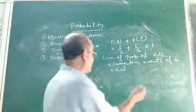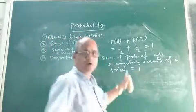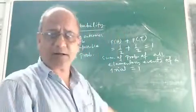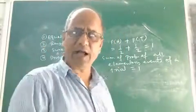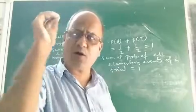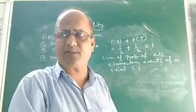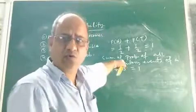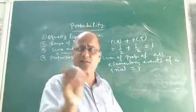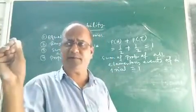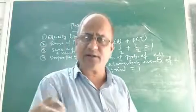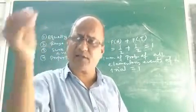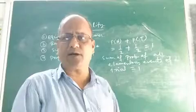Sum of probabilities of all elementary events associated with a trial or random experiment is always equal to 1. This is the most important property of probability, and it is true for all random experiments.